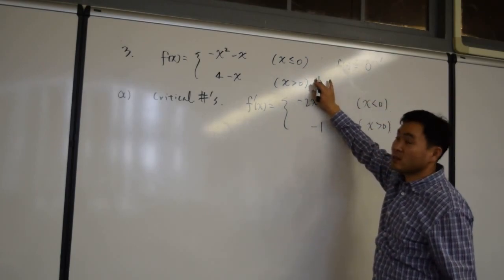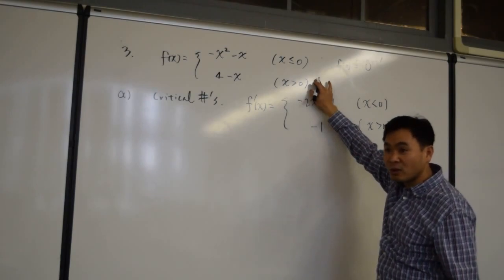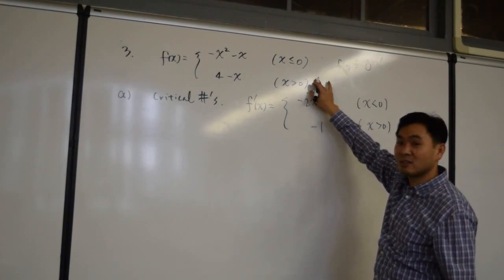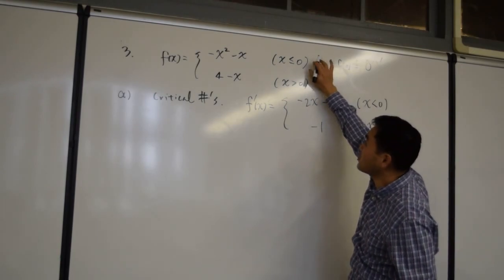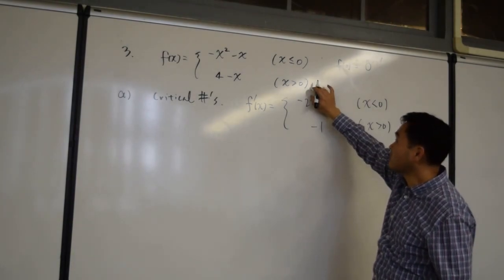Is this graph continuous? No, it's not continuous. Because if you plug in zero here, you get zero. If you plug in zero here, you get four. So it's not continuous.